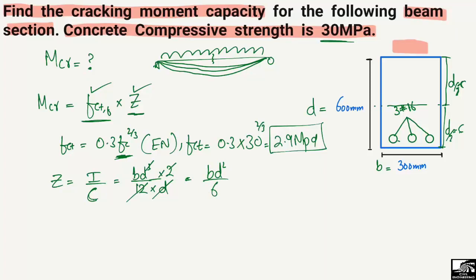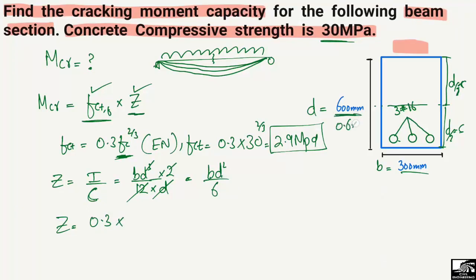Now we calculate the section modulus. With b = 0.3 m and d = 0.6 m, substituting into Z = b·d²/6, the section modulus for this beam section comes out to be 0.018 m³.